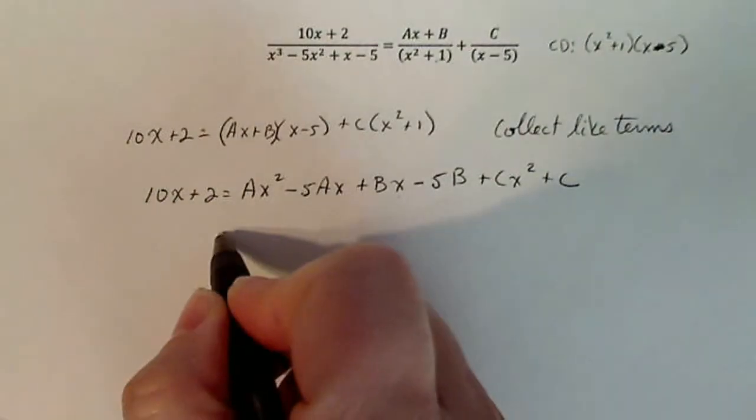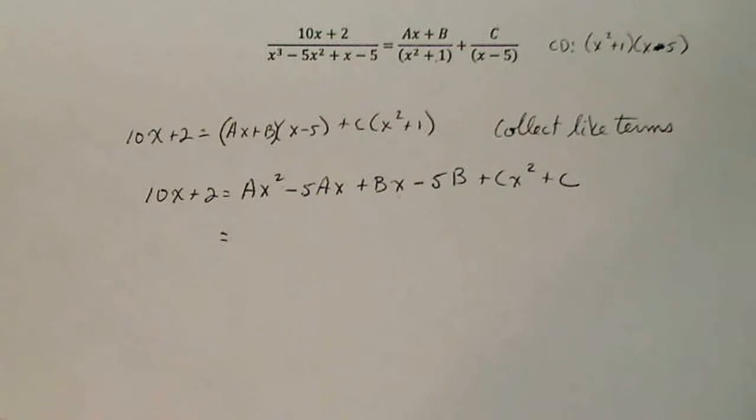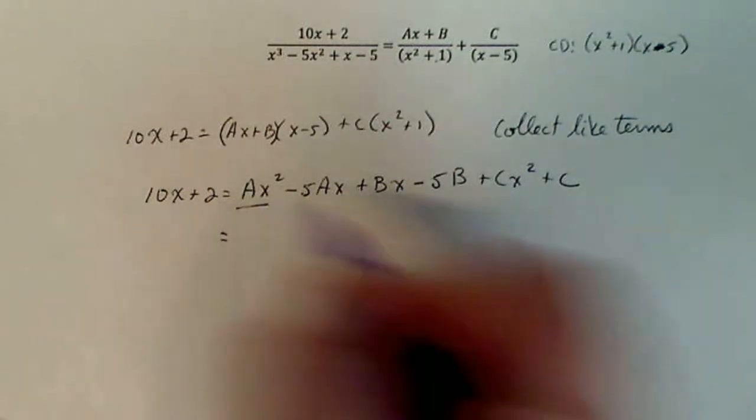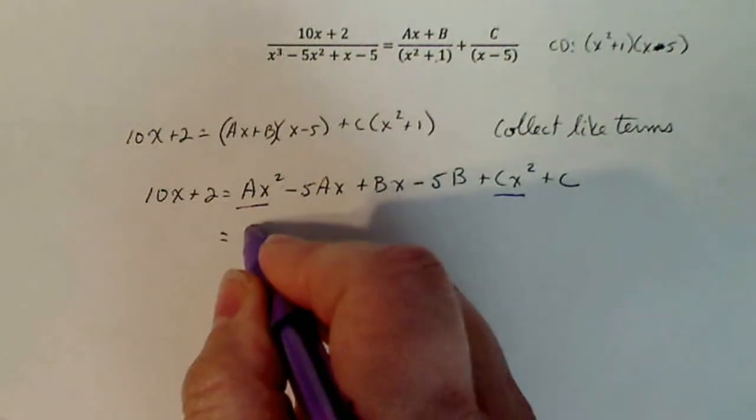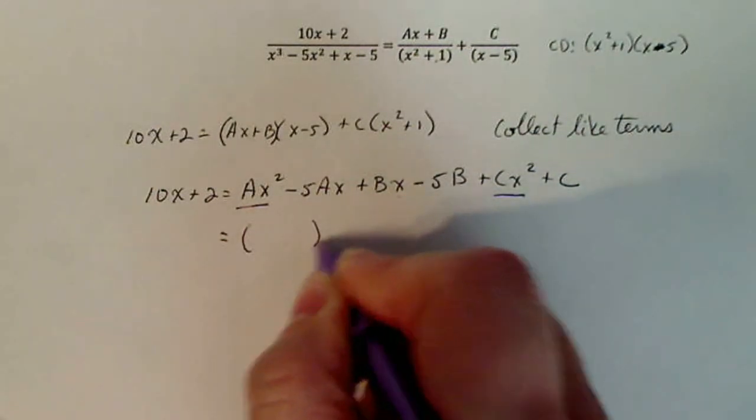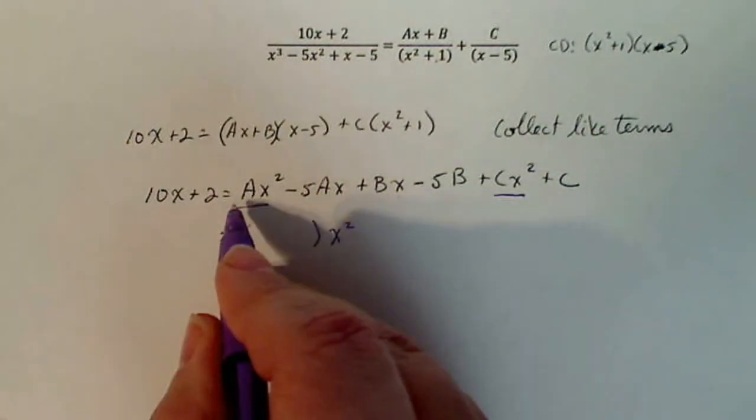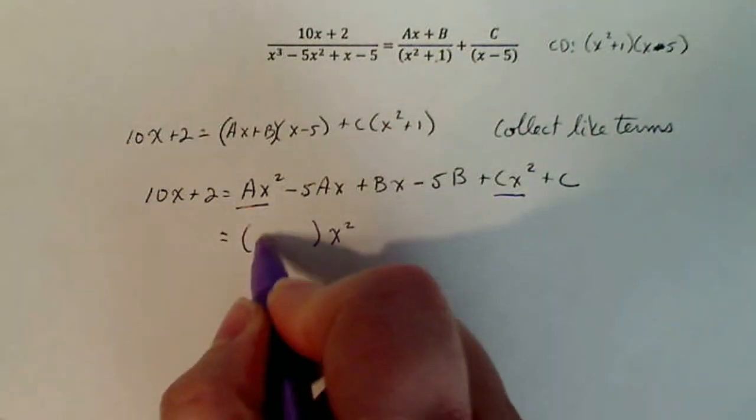Now, collecting like terms, I'll use different colors here, I guess. So this is an x squared term and this is an x squared term. So all my x squared terms are going to go right here. So it looks like it's going to be a plus c right here.